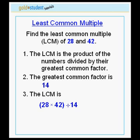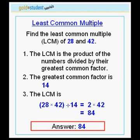The LCM, therefore, is 28 times 42 divided by 14. Rather than multiplying the two numbers, it is easier to divide the greatest common factor into one of the two numbers before multiplying. Here we divide the 14 into the 28, leaving us with the formula 2 times 42. This gives us the answer 84, which is the least common multiple of 28 and 42.